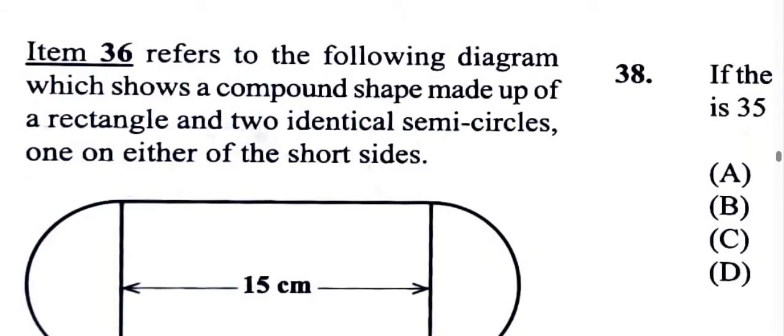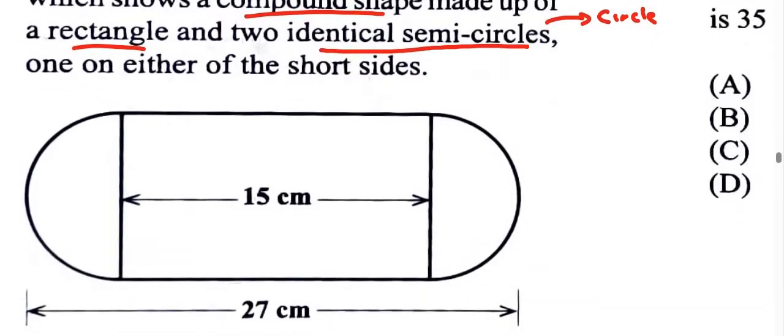We have a compound shape made up of a rectangle and two identical semicircles. Once we have two identical semicircles combined together, it's really one circle. So once we find the area of the circle and the area of the rectangle, we have the area of the compound shape.